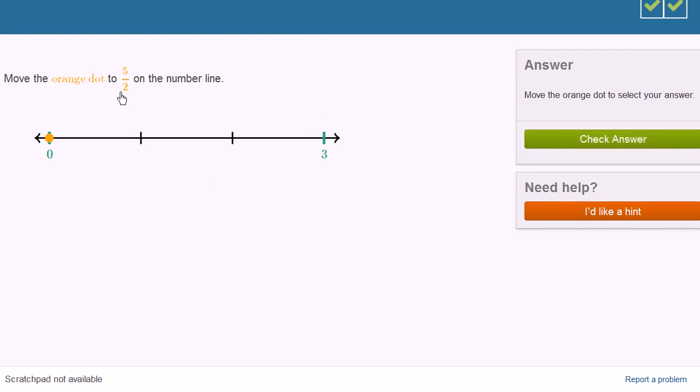Orange dot to 5 halves on the number line. So this is 1 half. This is 2 halves, which is a whole. This is 3 halves. This is 4 halves, which is 2 wholes. This is 5 halves.